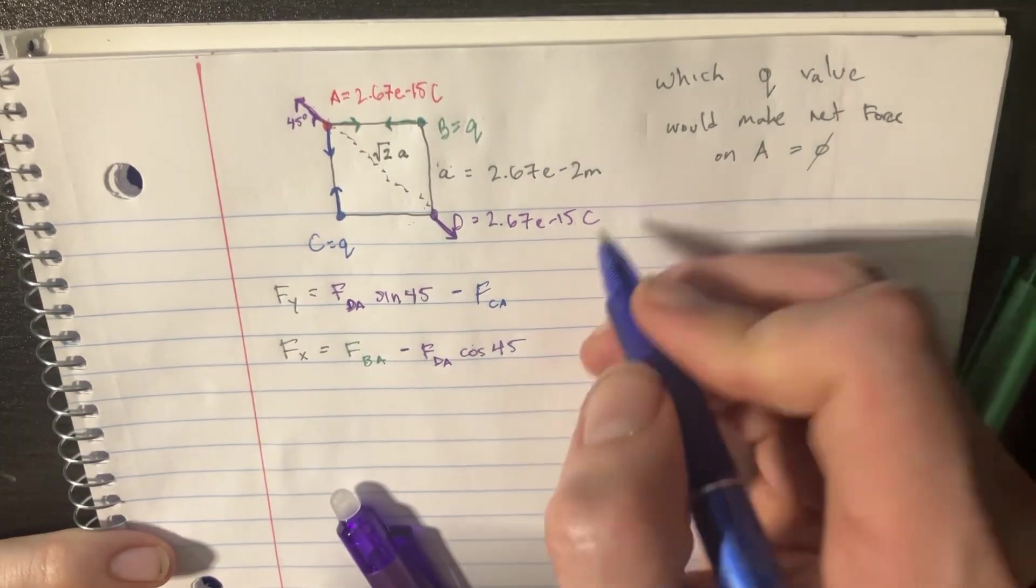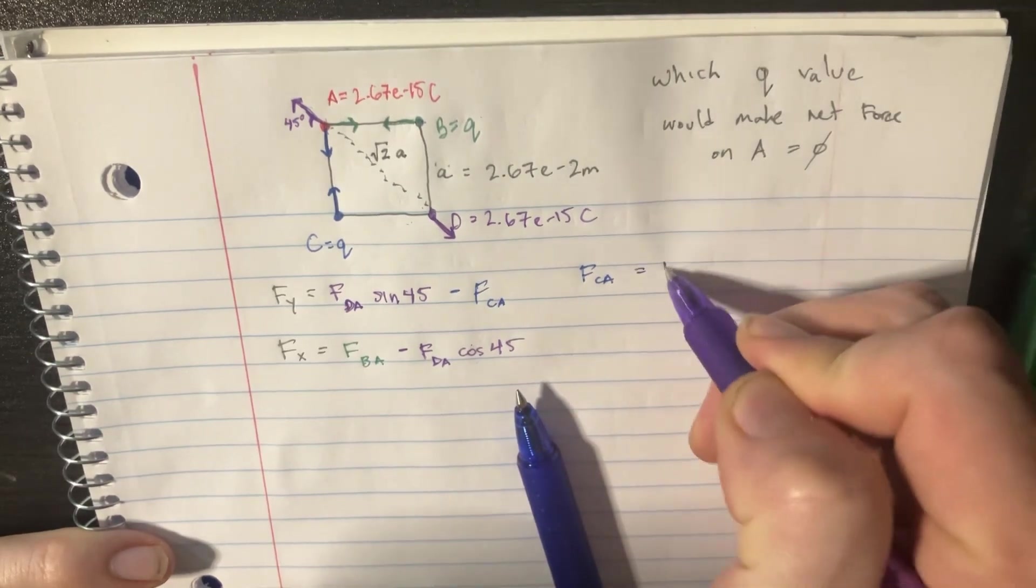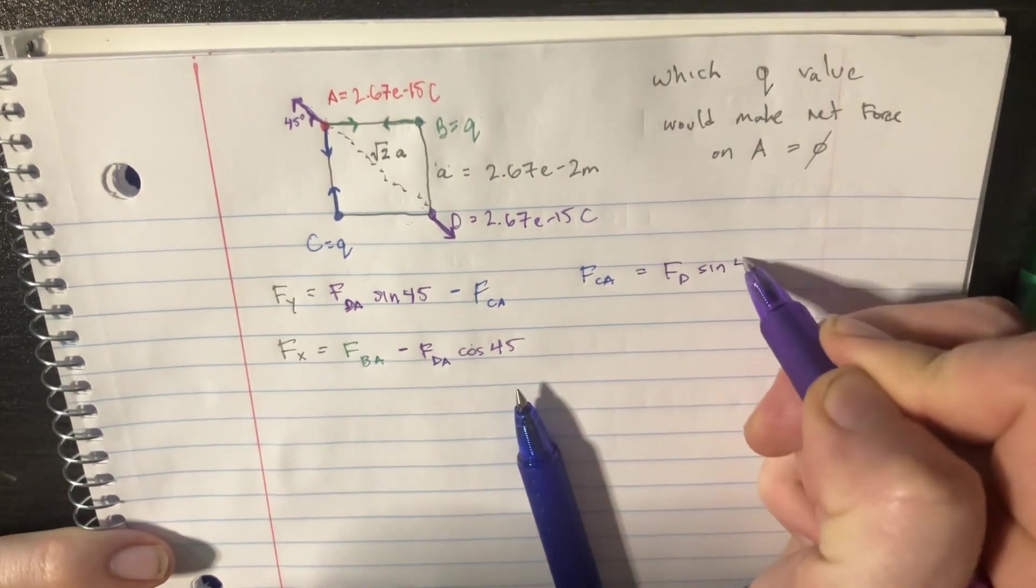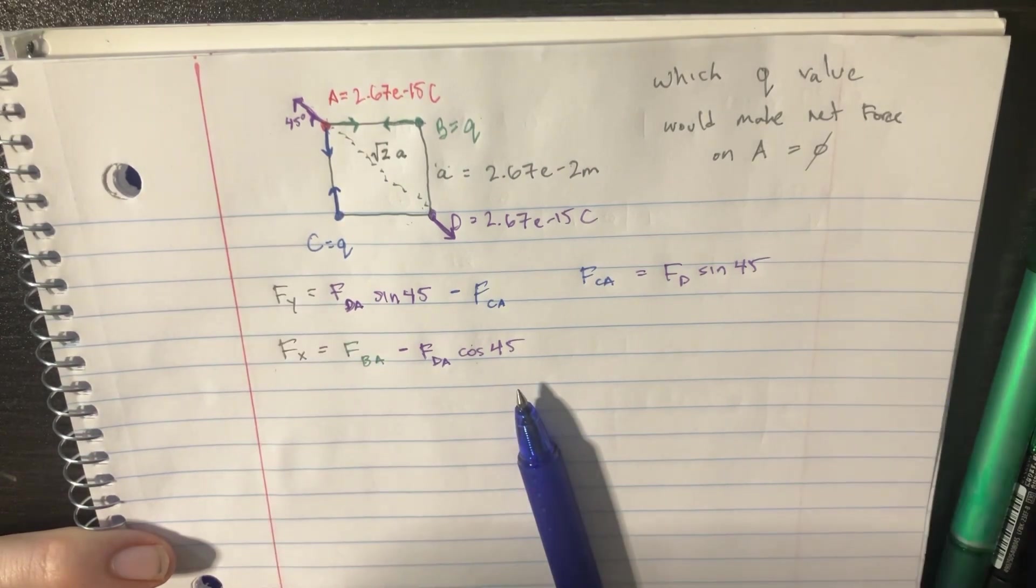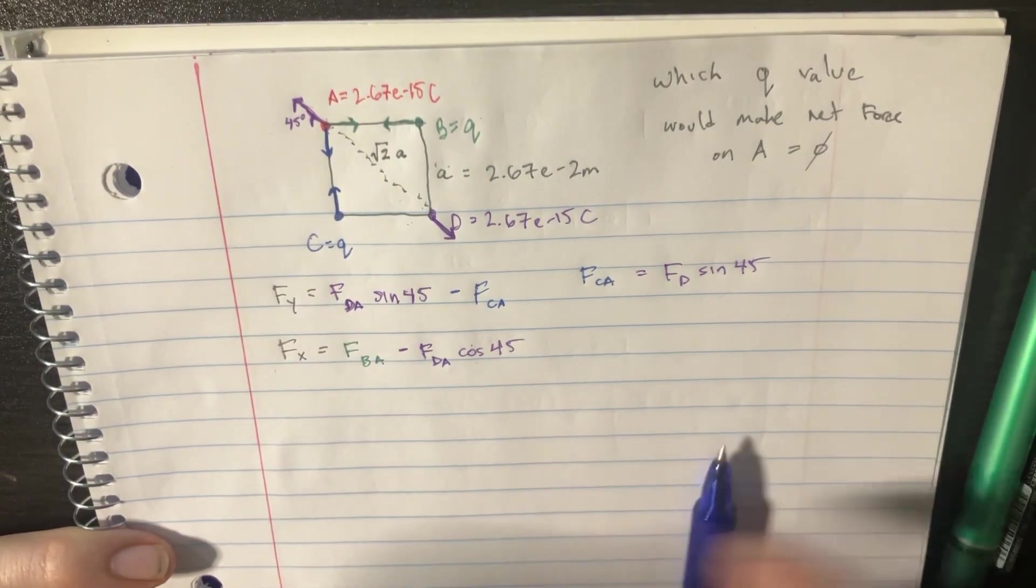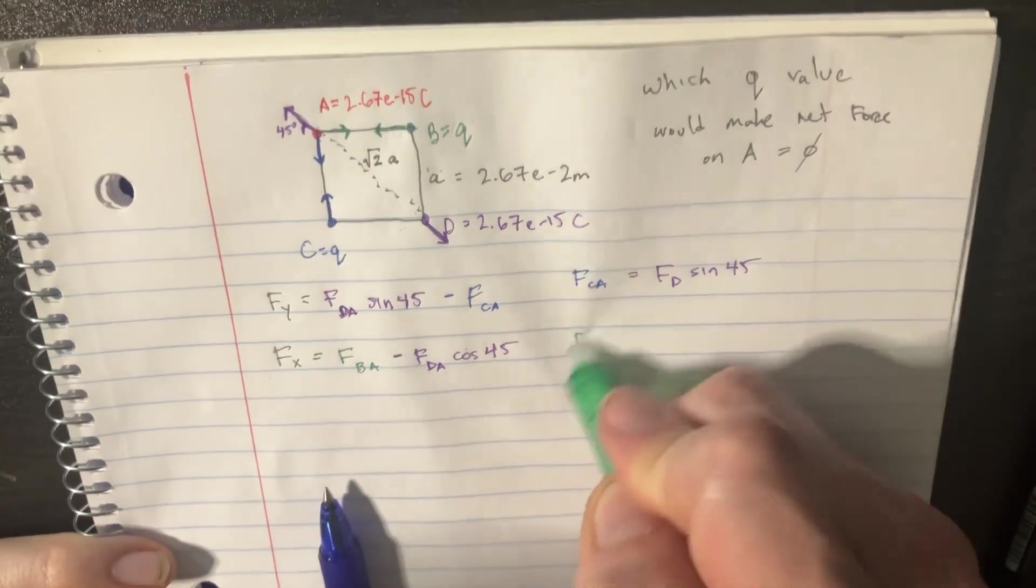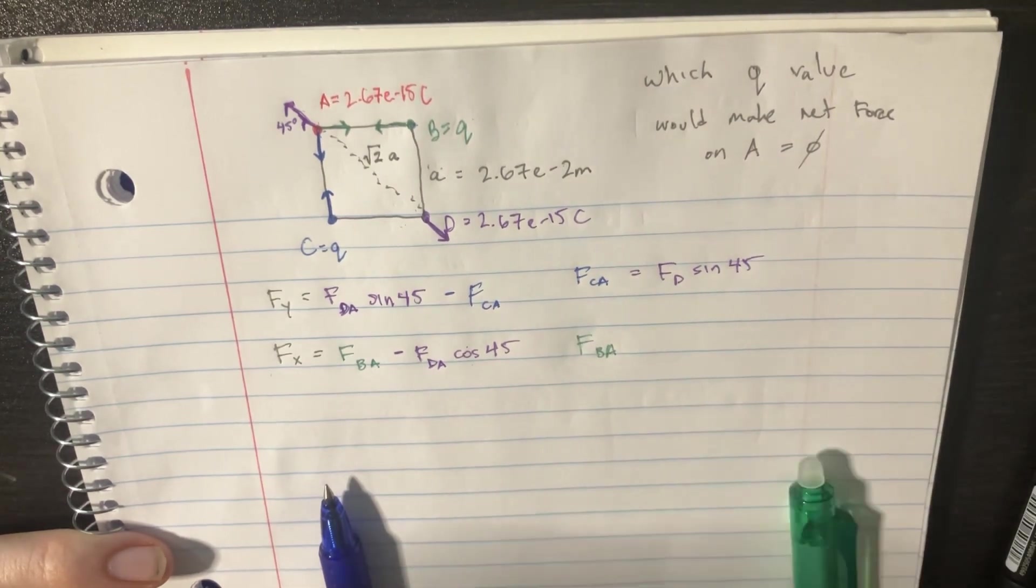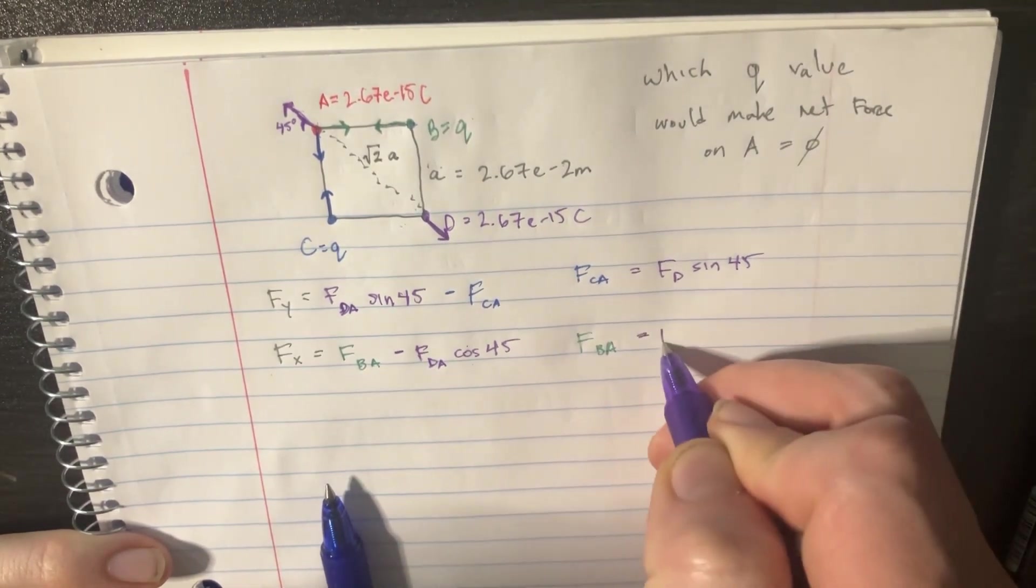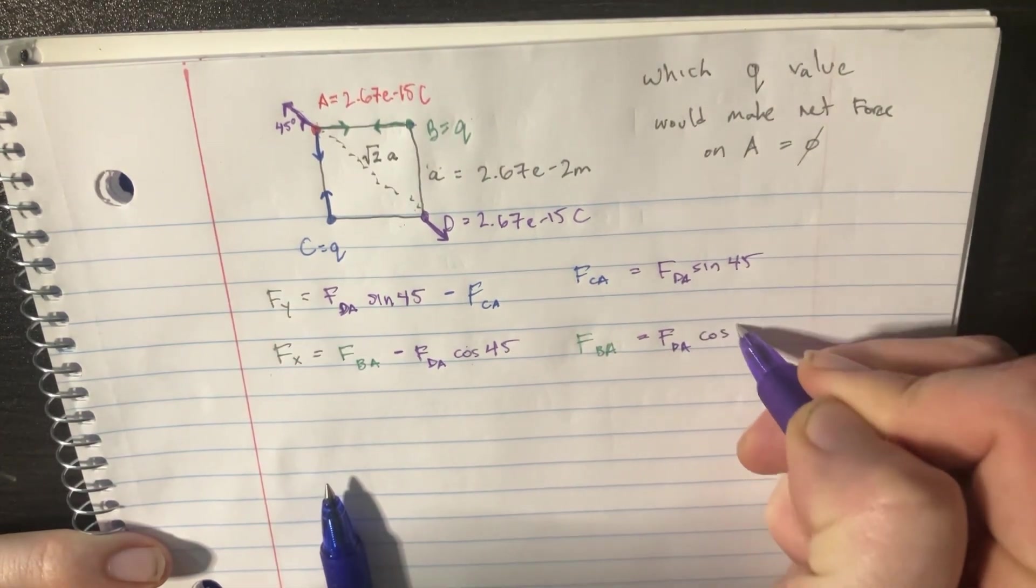So we can put that on the right over here. So FcA is actually just equal to Fd sine 45, because this is supposed to be zero, and that's supposed to be zero. And over here, Fba is equal to Fda cosine 45.